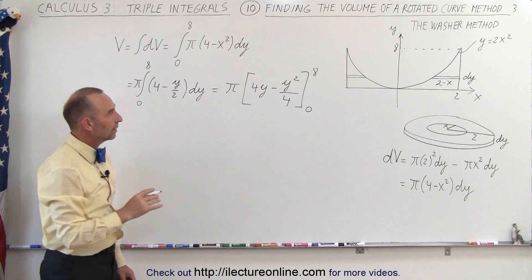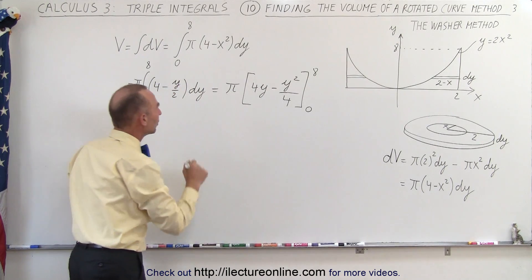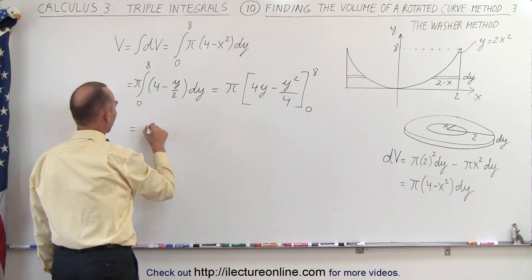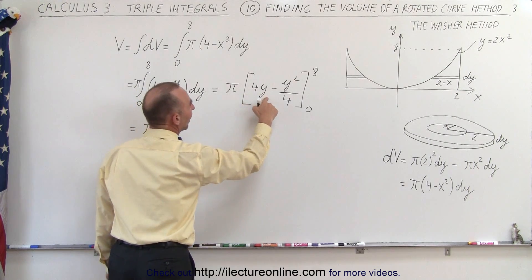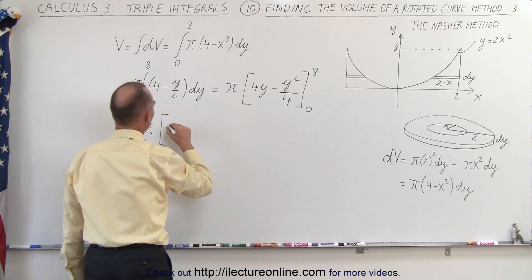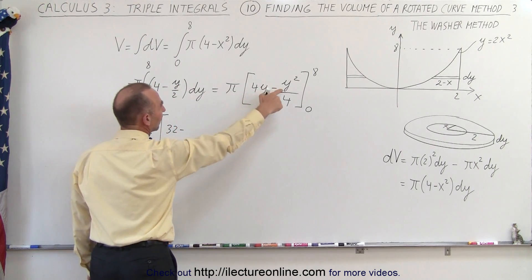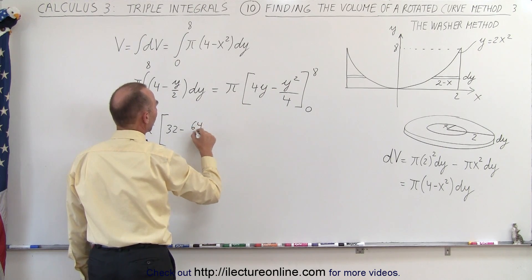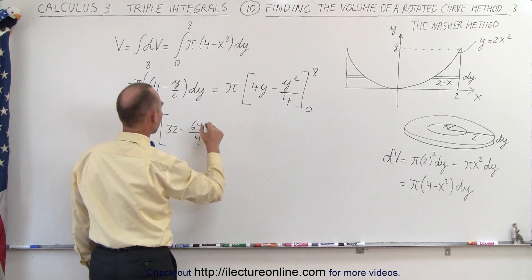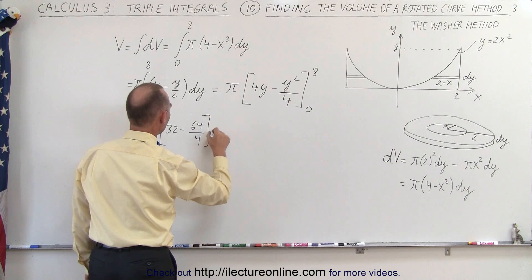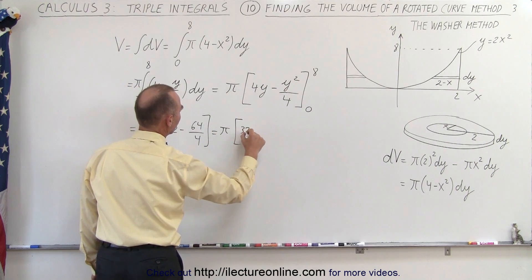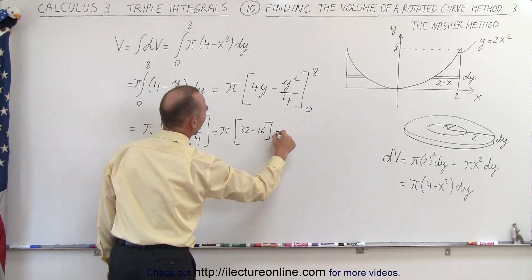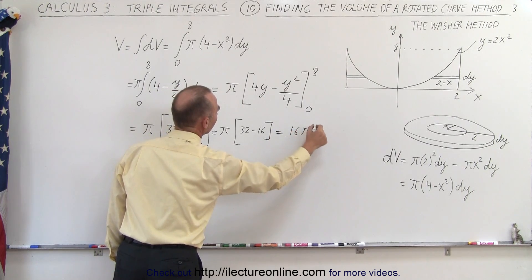When we plug in the lower limit, we get nothing, so we only need the upper limit. This equals pi times 4 times 8, which is 32, minus 64 divided by 4. So this is equal to pi times (32 minus 16), or 16 pi.